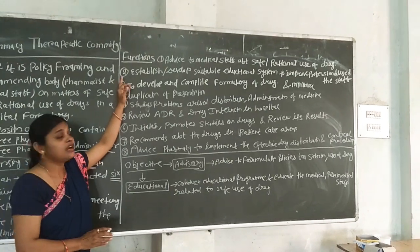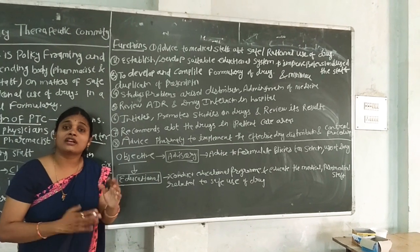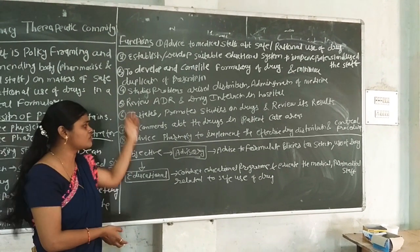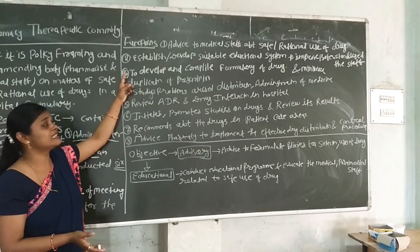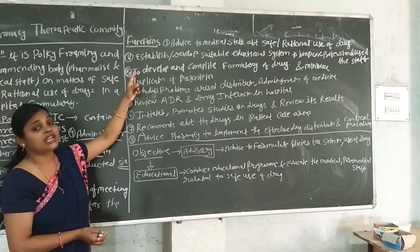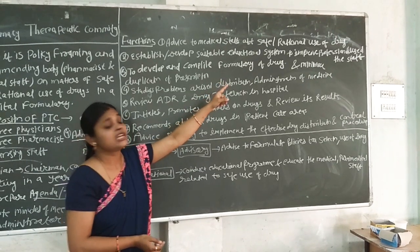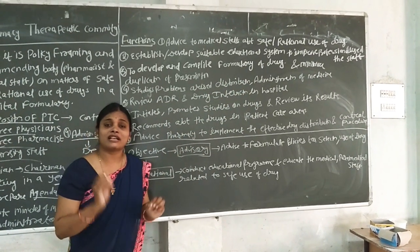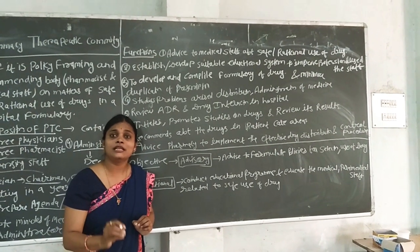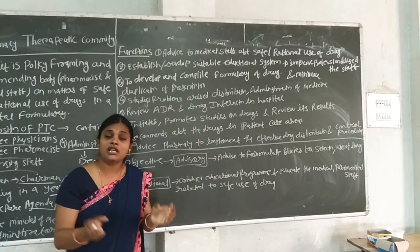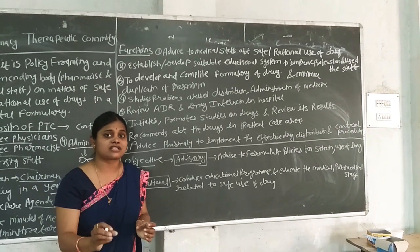Now we see the functions of the PTC — the Pharmacy and Therapeutics Committee. There are eight functions. Start with the first: advise medical staff about the safe and rational use of drugs. Safe means considering dosing and the risk of the drug.